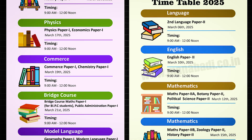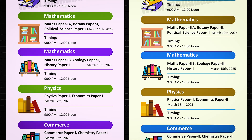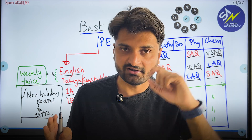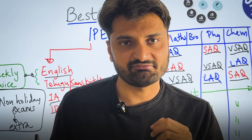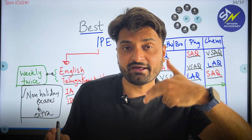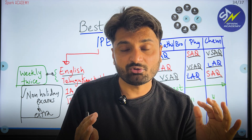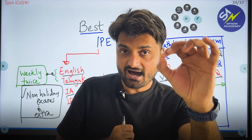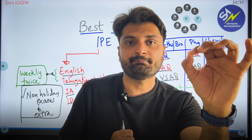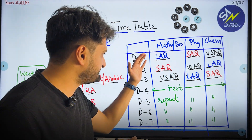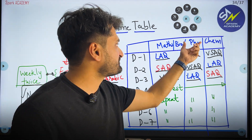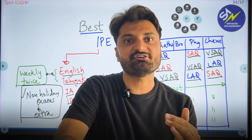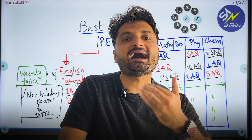The second part of the strategy involves your intermediate exam timetable. If you observe the timetable, many subjects have gaps — minimum two days, one day, or three days of holidays between exams. Use those gap days wisely. For subjects with only one day gap, you can do one extra day of Physics and take Maths a little easier.